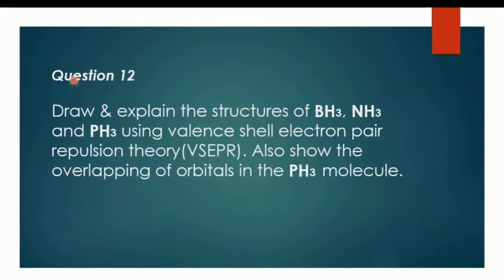Today we will discuss about question 12: draw and explain the structure of PH3 and NH3 using valence shell electron pair repulsion theory. Also show the overlapping of orbitals in the PH3 molecule.